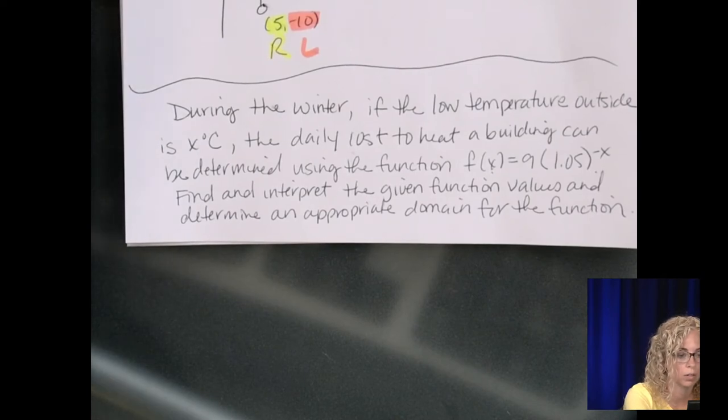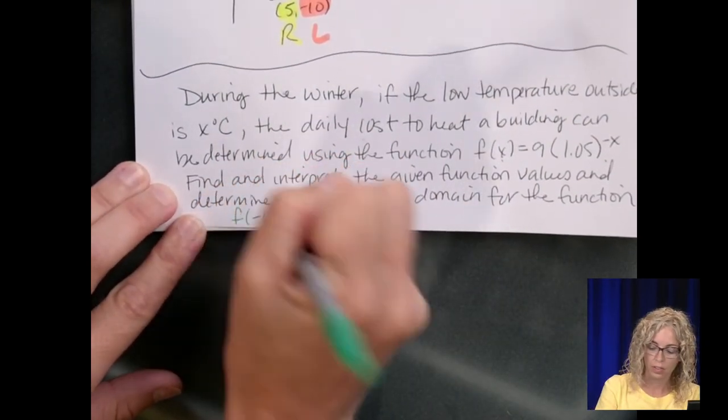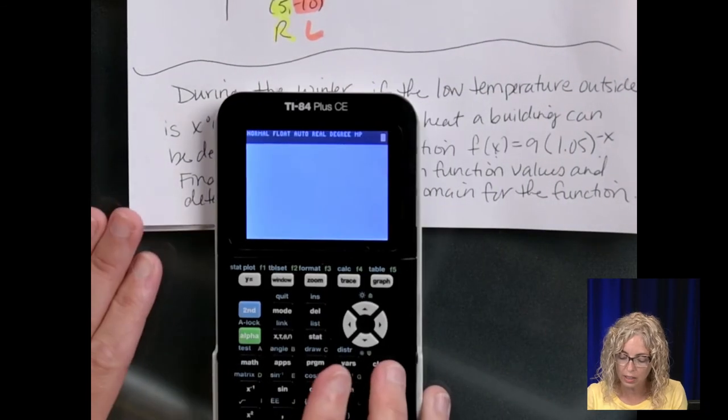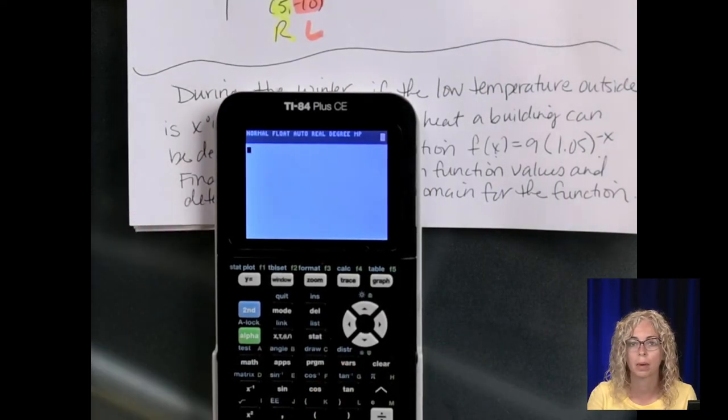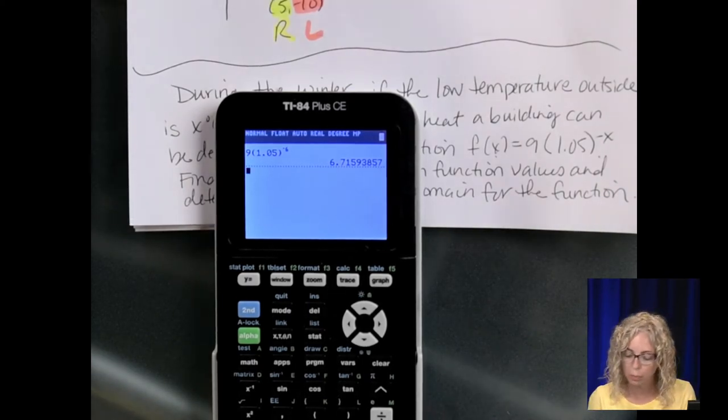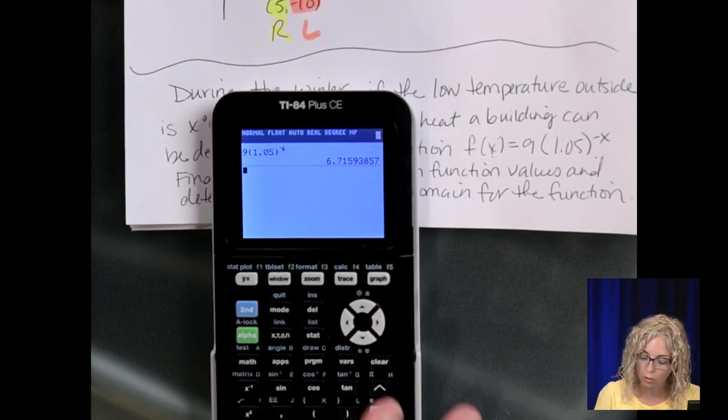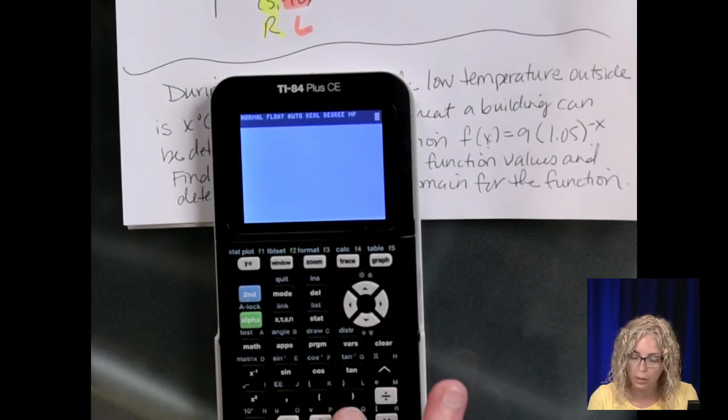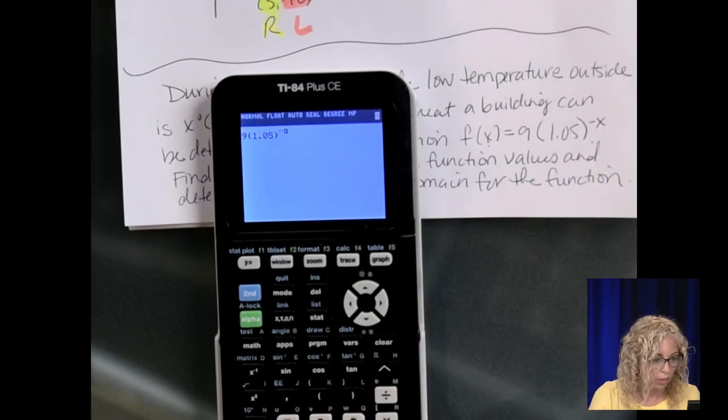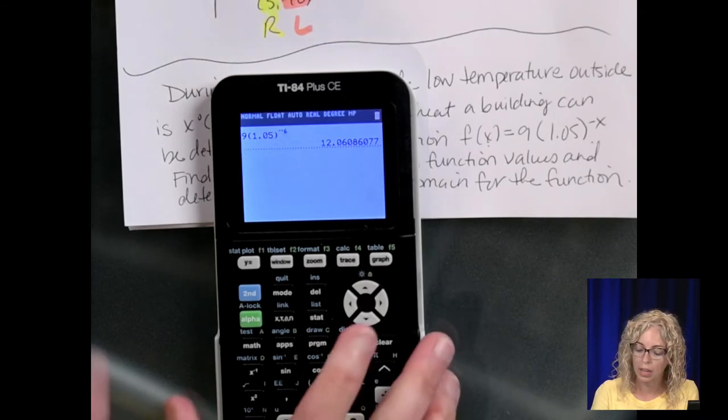So let's look at some of these values. So the first value is f(-6). If we were to do this right on the calculator, 9 times 1.05 to the negative, I forgot the double negative. So 9 times 1.05 to the negative negative 6. We get 12.06.